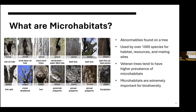Microhabitats are abnormalities found on a tree — things like rot holes, bark pockets, loss of bark, crown deadwood, fungus, etc. These different microhabitats are used by over a thousand species globally for things like habitat, resources, and mating sites. Veteran trees tend to have a higher prevalence of microhabitats on them, and since microhabitats are very important for biodiversity, veteran trees are also very important for biodiversity by default.